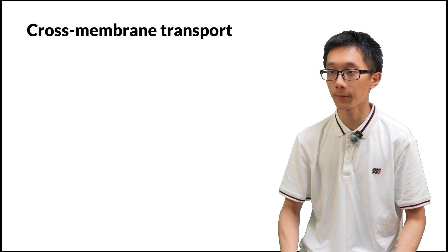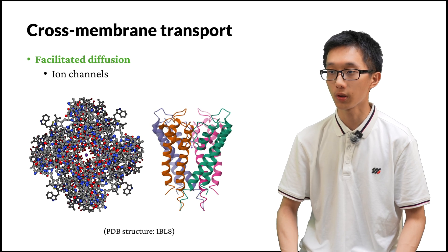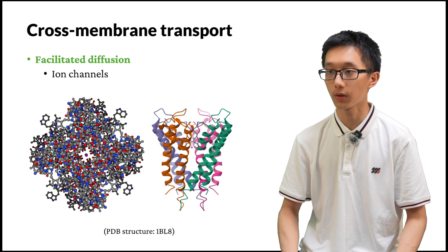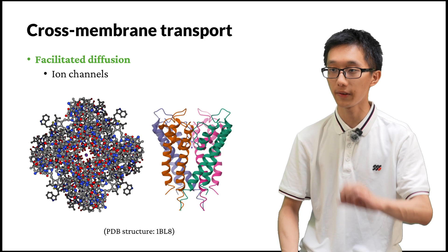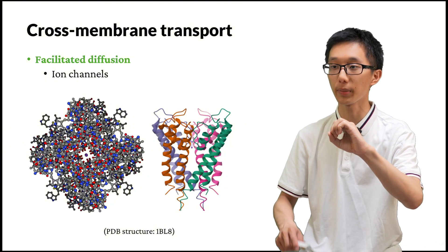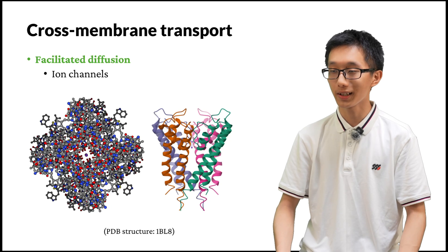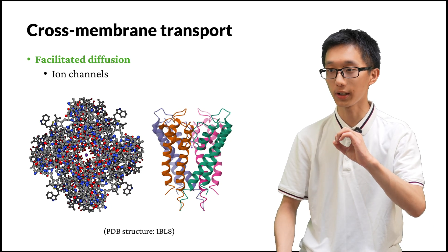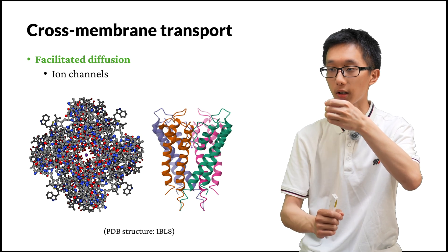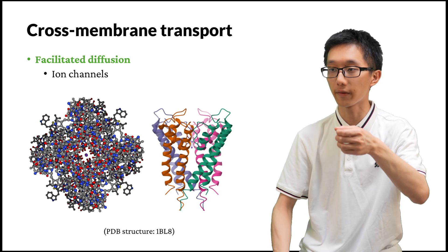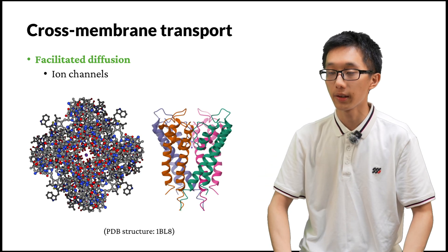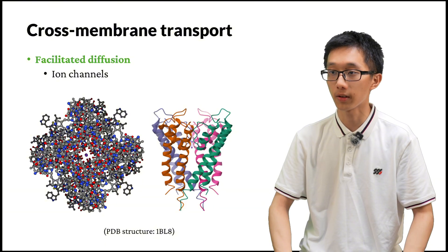Now let's examine two specific types of cross-membrane transport: facilitated diffusion and active transport. In facilitated diffusion, one way is to use ion channels. Looking at a potassium channel — in the top view, there is a very small hole in the middle through which one potassium ion can pass. More clearly seen on the side view, the hole is actually a long tube, a long channel. The potassium ion can go all the way from one side of the membrane to the other side. Thus, the protein provides a tunnel — a channel — for the ion to diffuse.